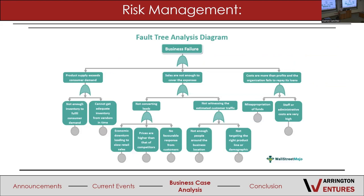The fault tree analysis diagram shows how a business failure branches into different sub-failures. You want to have different contingencies for everything. When building your implementation roadmap and timeline with a company, you need to look at the possible risks and failures that could accompany each step. For each failure, you identify where you can minimize that risk — and that can be done through this fault tree analysis diagram.